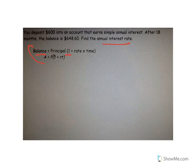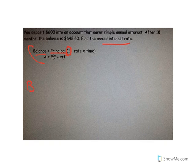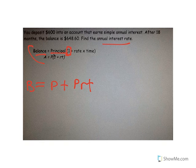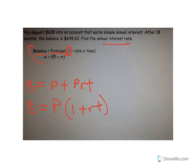We can use the balance formula, which makes logical sense: Balance = Principal × (1 + R × T). The 1 accounts for the original principal, and when distributed, Balance = Principal + Principal × Rate × Time. We'll use the formula with 1 plus R times T. The balance is $648.60 and the principal is $600.